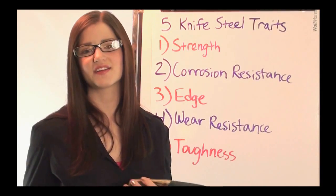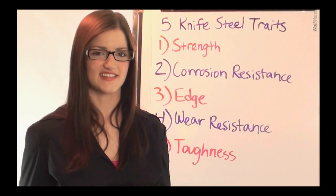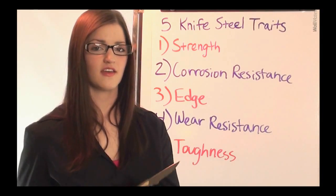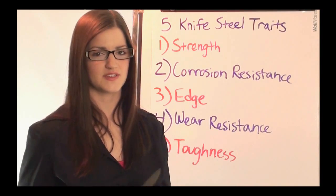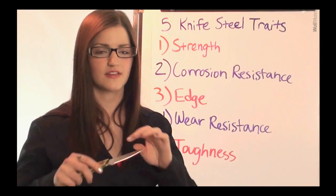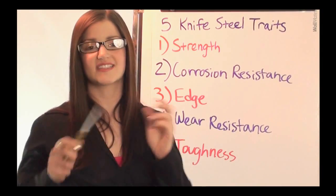The fourth trait is wear resistance - how much abuse can the steel take? And then the last trait is toughness, which is a measure of how brittle the steel is. The more tough it is, the less brittle, so that means that it won't snap.